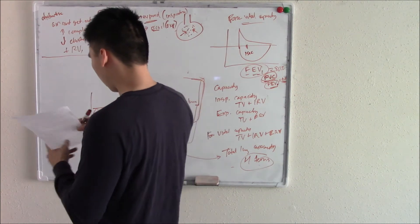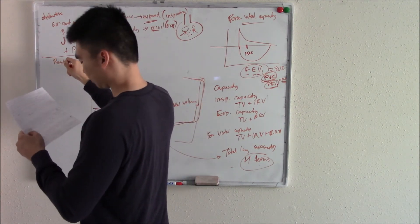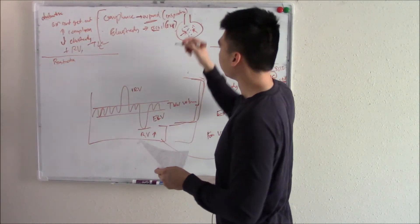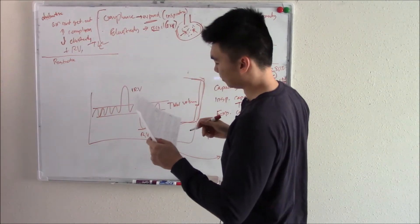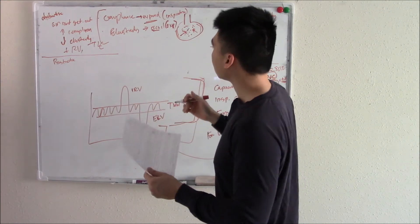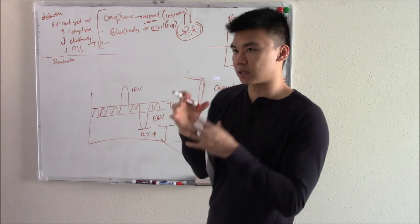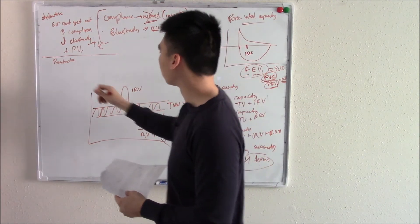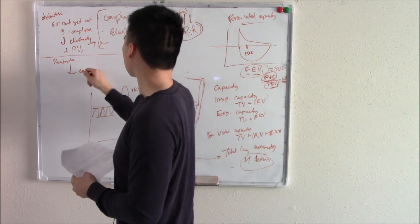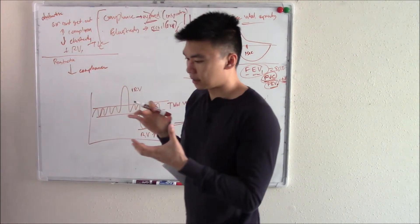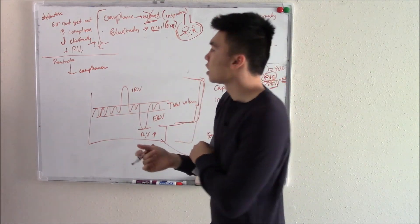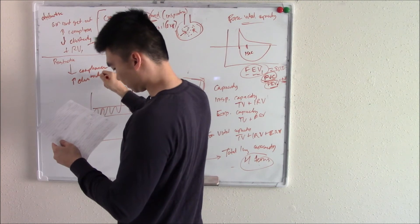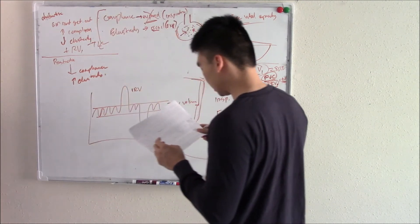You can also have what we call restrictive lung disease. Restrictive is due to stiffening of your respiratory system. When it's stiffened, you'll take air in but it can't expand — it's stiff. So that decreases compliance. However, because it's stiff, it can still collapse and recoil, so you can have increased elasticity.